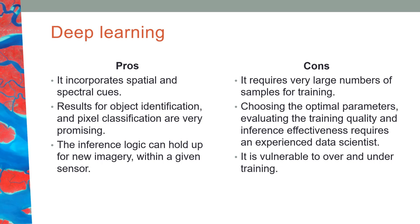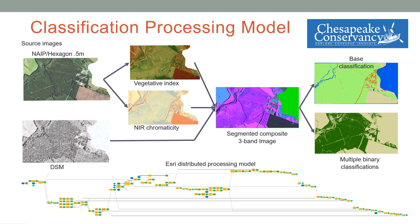Here is a deep learning classification processing model on a project done by the Chesapeake Conservancy. They start with NAEP imagery at half a meter resolution and a digital surface model, develop a vegetative index, look at the NIR band reflectance, and use the DSM for segmentation. The model is trained with training samples and produces a final classification. Here is a graphic of the ArcGIS model that implements this workflow. If you have any questions or comments, please post them in the lesson seven general questions and comments discussion forum.